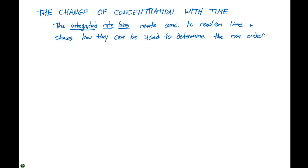Let's take a look at an example reaction: A giving us B plus C. So we have a decomposition reaction here, where we have one reactant giving rise to two products. If we make a plot of concentration versus time, we'll see a relationship that looks exponential, or non-linear.